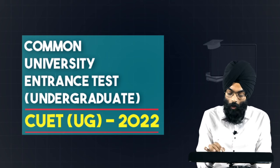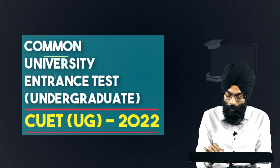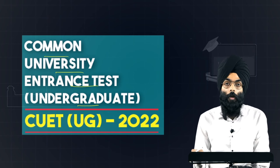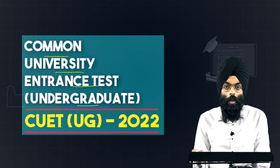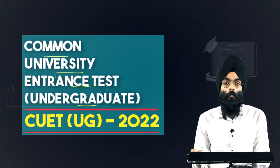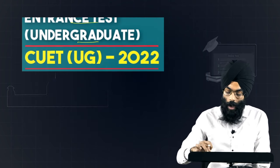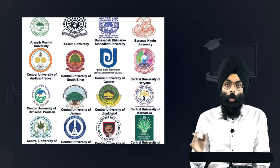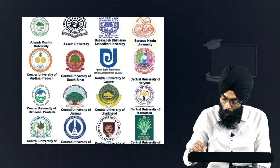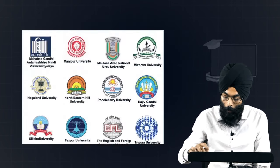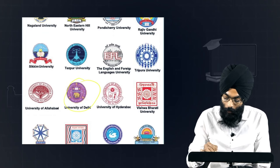Firstly, CUET stands for Common University Entrance Test. The test has been introduced for admission into all the undergraduate programs of the Central Universities — those established by an Act of Parliament. You can see the list here. The list is long but you will already know a few of them like BHU, Jamia Milia, and the famous one, University of Delhi.